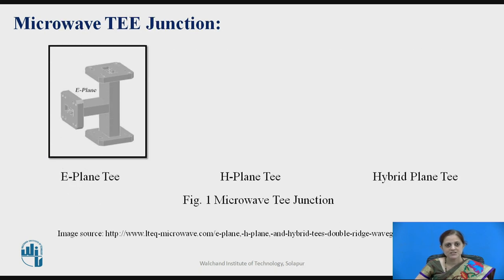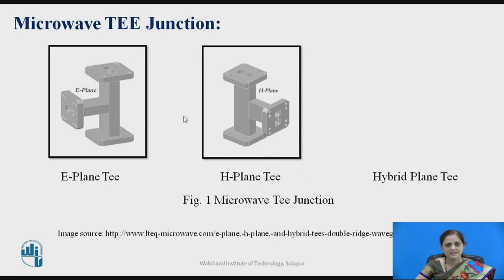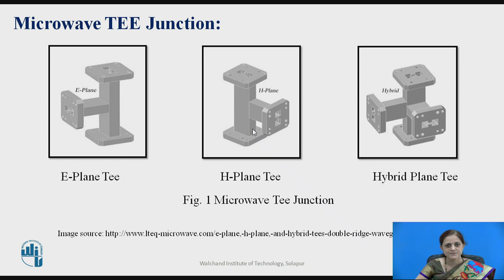In E-Plane T-Junction, the E-Arm, that is the side arm, is connected to the main waveguide at the wider dimension. Whereas in H-Plane T-Junction, the side arm, also known as the H-Arm, is connected to the broader dimension of the main waveguide. The combination of both H-Plane T and E-Plane T forms the Hybrid Plane T, also known as the Magic T-Junction.